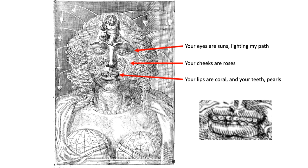Somebody in the 16th century made a very funny picture of what a woman described by all these poems would actually look like — and she's a monster. Her breasts are globes, which looks terrible. Especially look at her mouth: her lips are coral. Well, coral is bony and pearls are round, so this mouth is disgusting. What the artist has done is literalize the model — not just pull from it the pretty things like the redness of the coral or the white lustrousness of the pearls, but take the whole thing. And you can see that doesn't work.